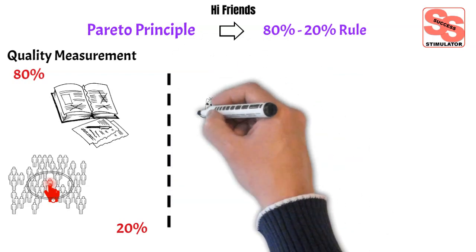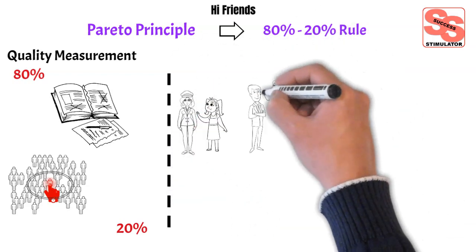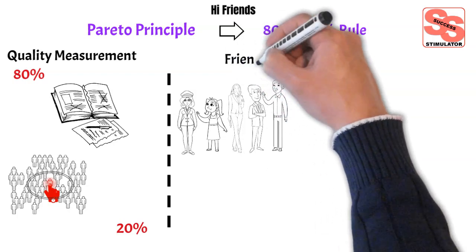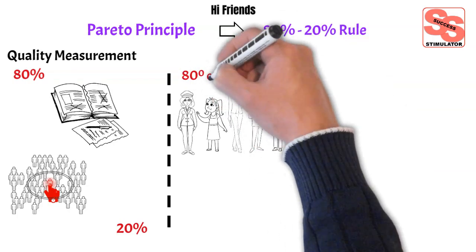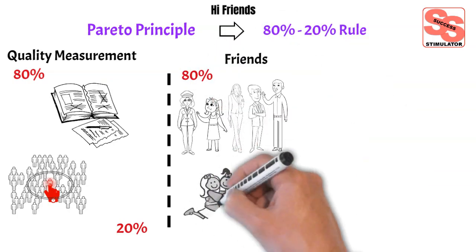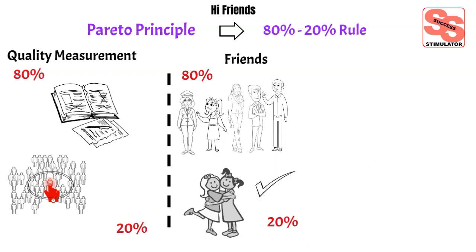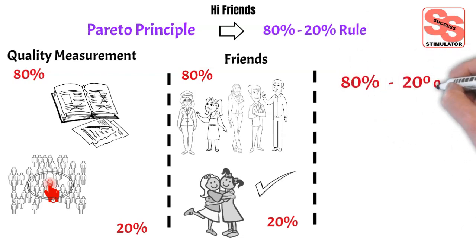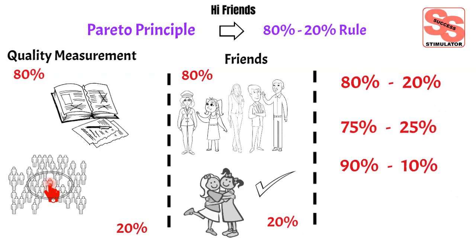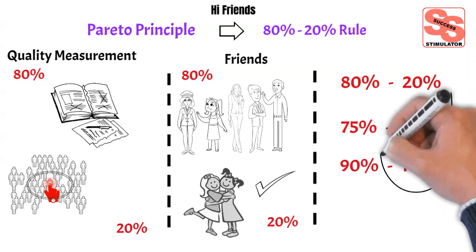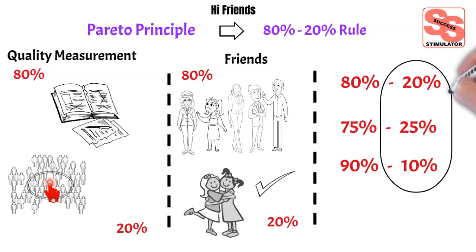Another classical example from real life: if you watch closely your friends circle, you always spend 80% of your time with 20% of your friends. Another important factor is that at times the percentage may vary, like 75 and 25, or 90 and 10. However, the rule remains the same — a small percent always has a big impact in most cases.